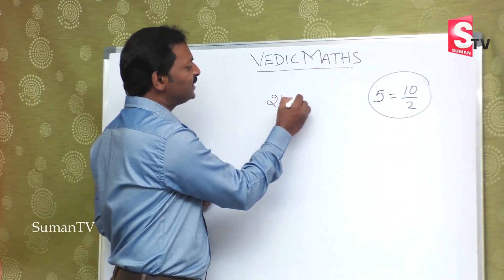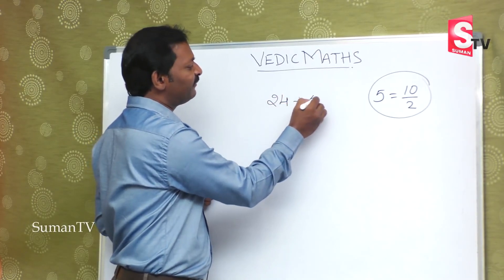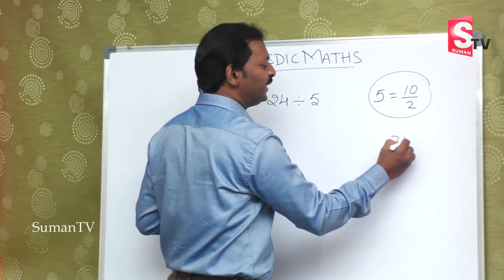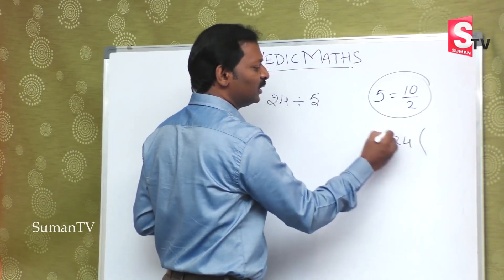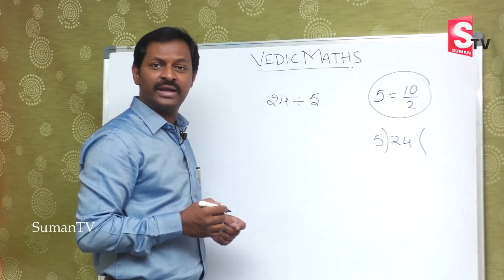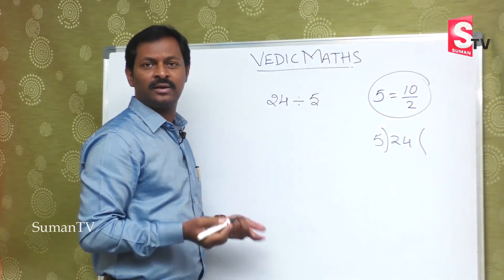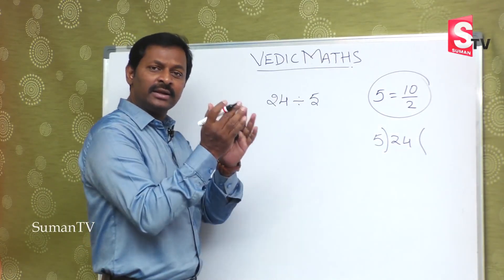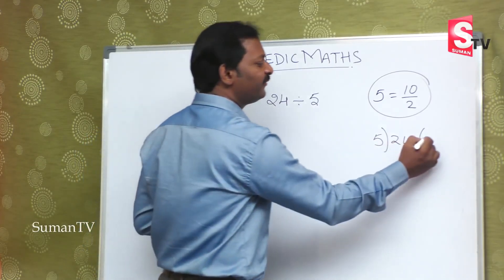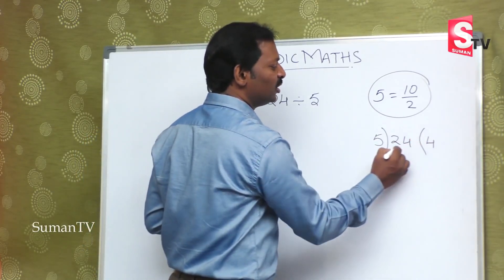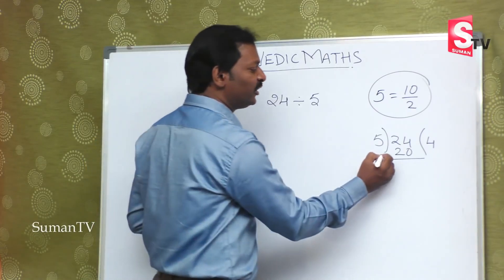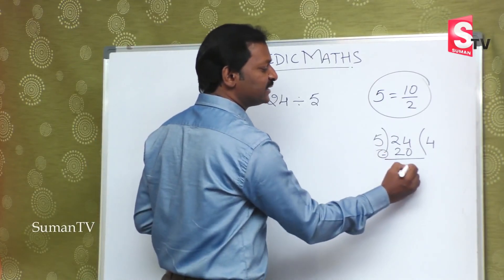Suppose twenty four is divided by five. In the school method, we would do twenty four divided by five. In the five table, twenty four is not directly there. So we find the nearest number in the five table, which is twenty. So five times four is twenty.